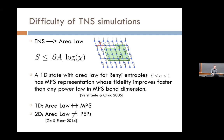In 1D, area law is essentially equivalent to a tensor network representation. But this is certainly not true once you go to 2D and higher — you can easily write down area law states which provably don't have PEPS representations. The Eisert paper showed an even more powerful version of this: that the area law space is extremely large.